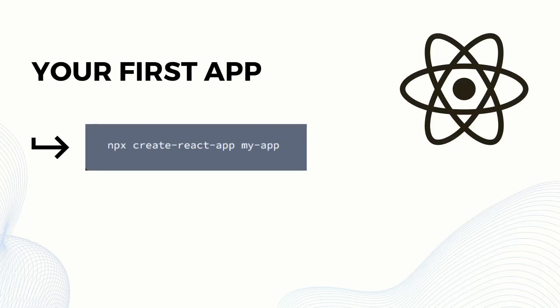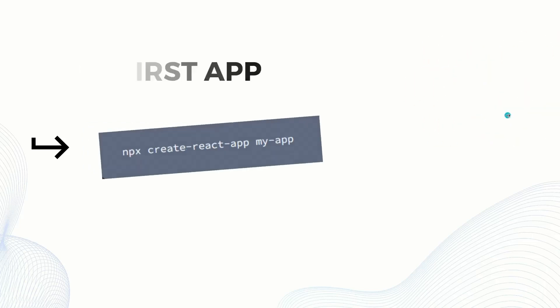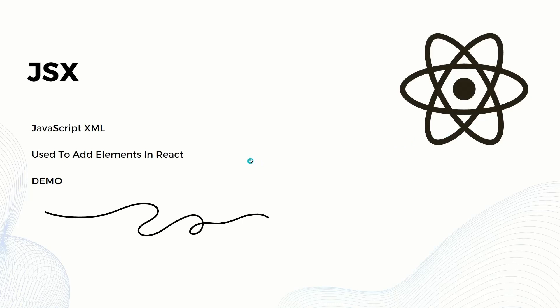After creating your first application with React.js, let's dig deeper and learn how we can add elements into React. We need to add elements with the help of JSX. JSX is a short form of JavaScript XML, and it is used to add elements into the React application.